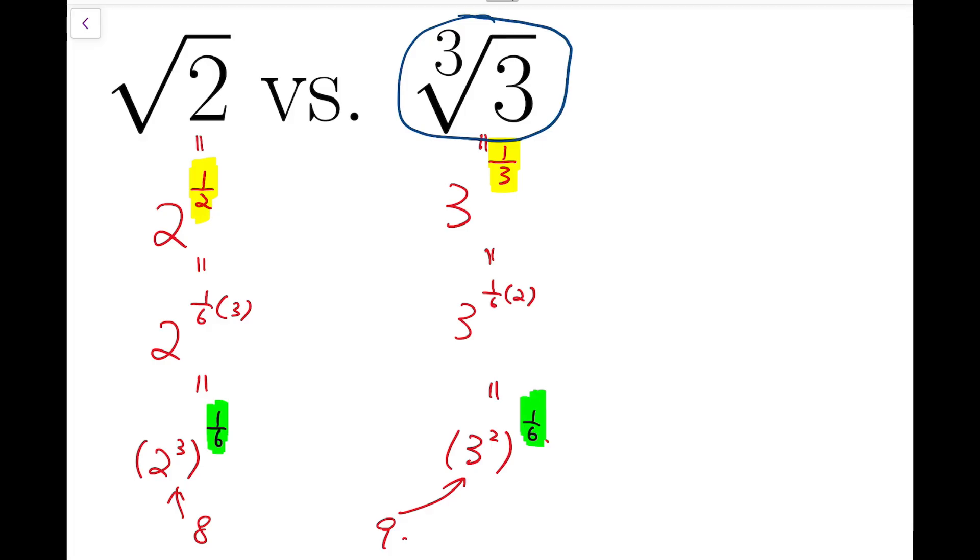To present this verbally, I'm going to say that, because square root of 2 is the sixth root of 8, while the cube root of 3 is the sixth root of 9, so by comparing directly, we can say that cube root of 3 is larger.